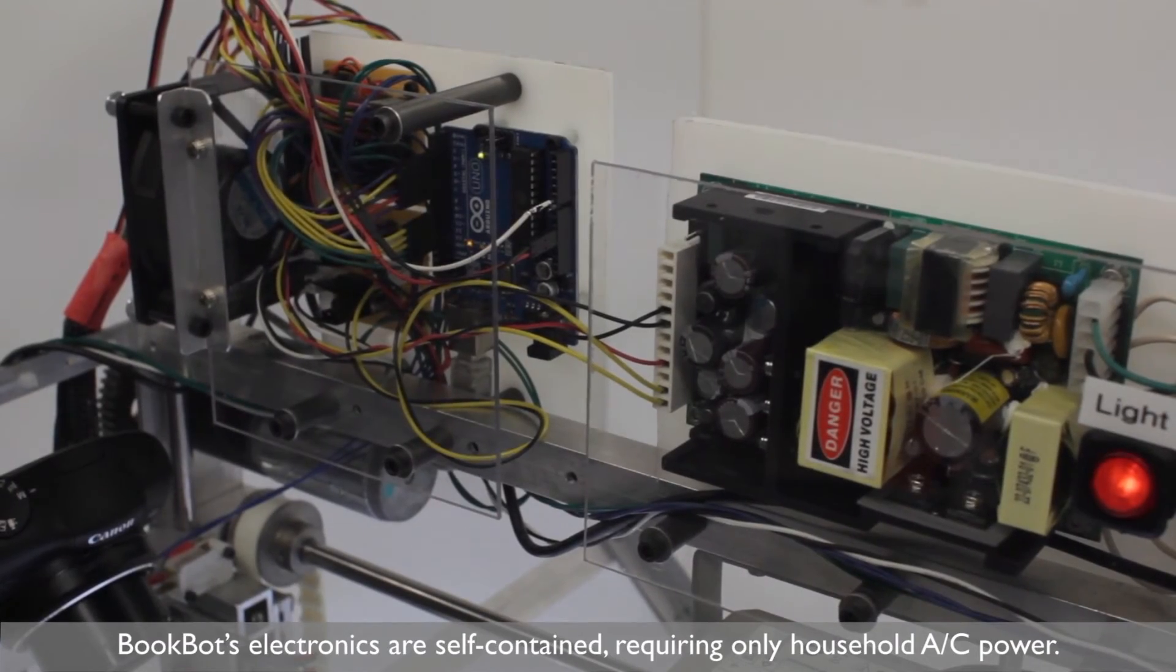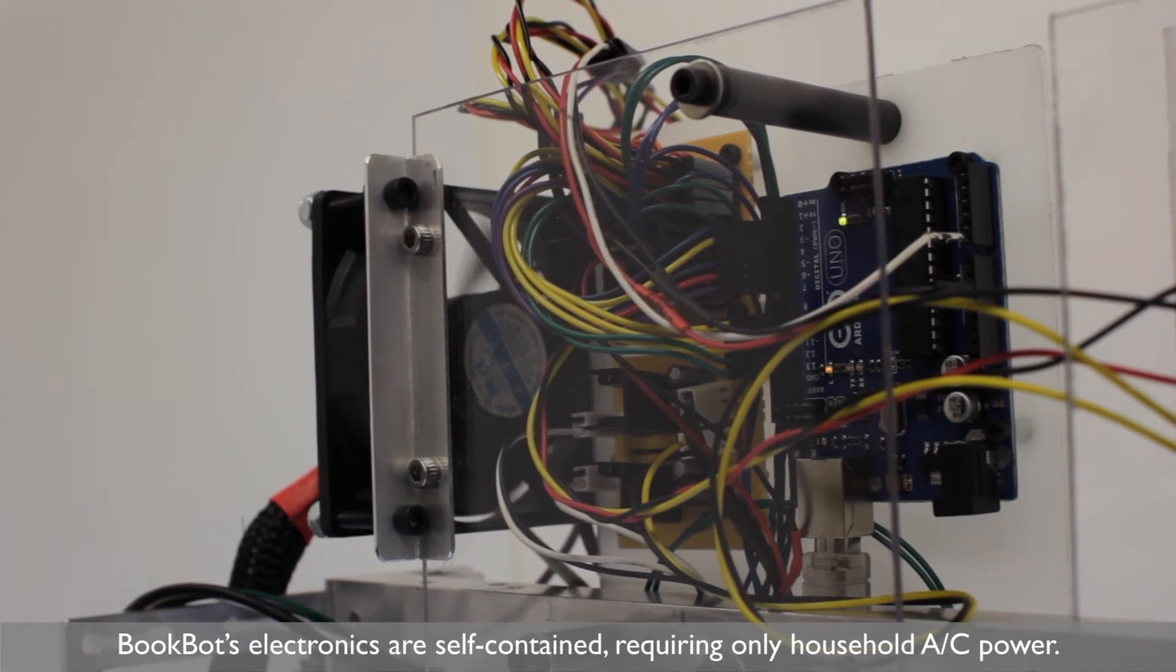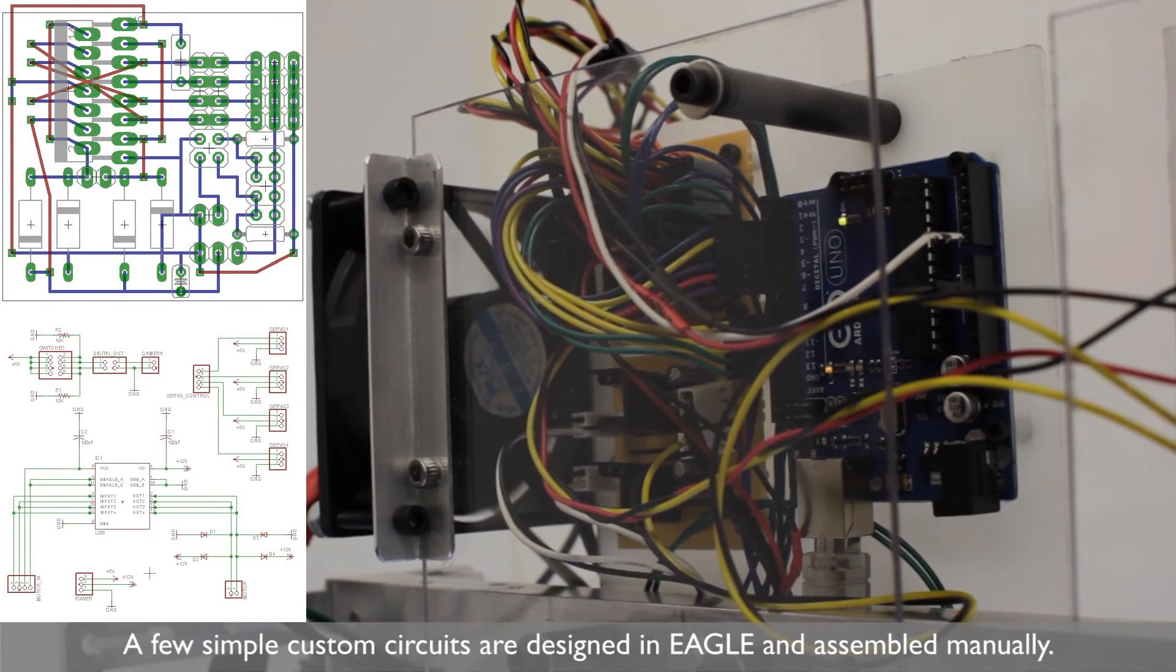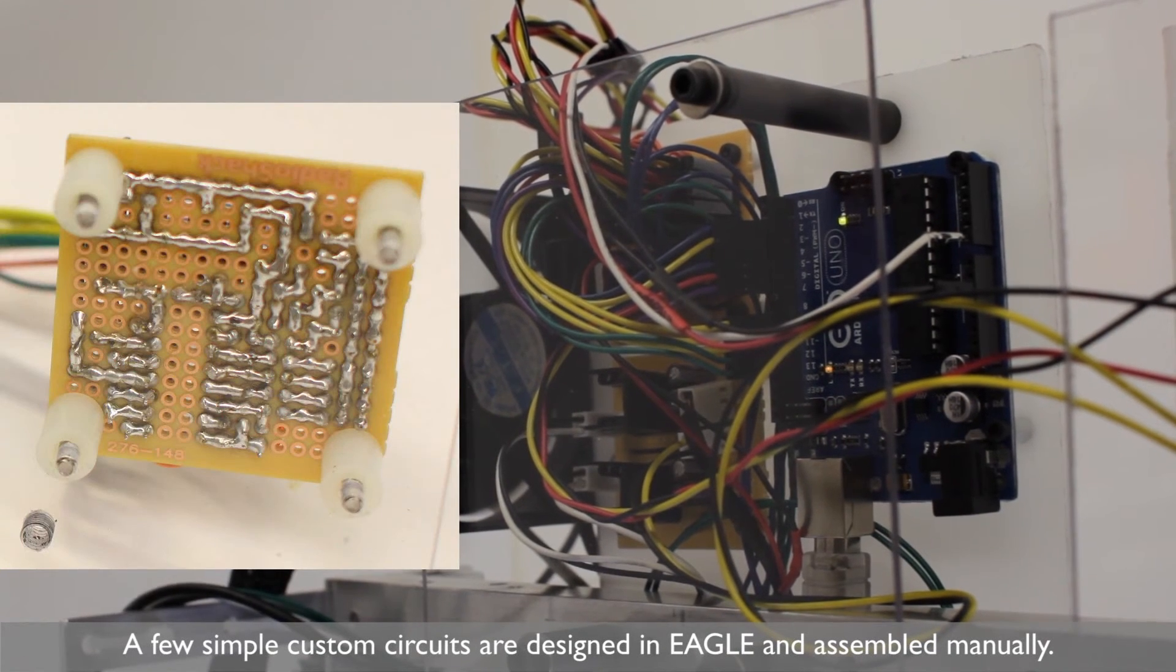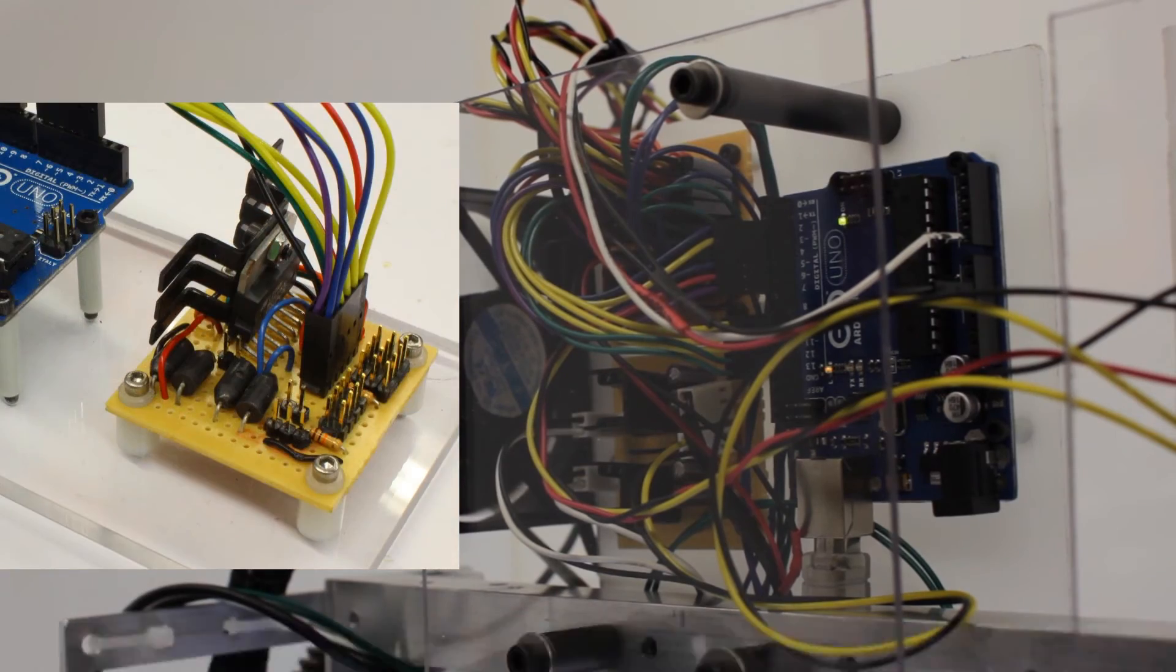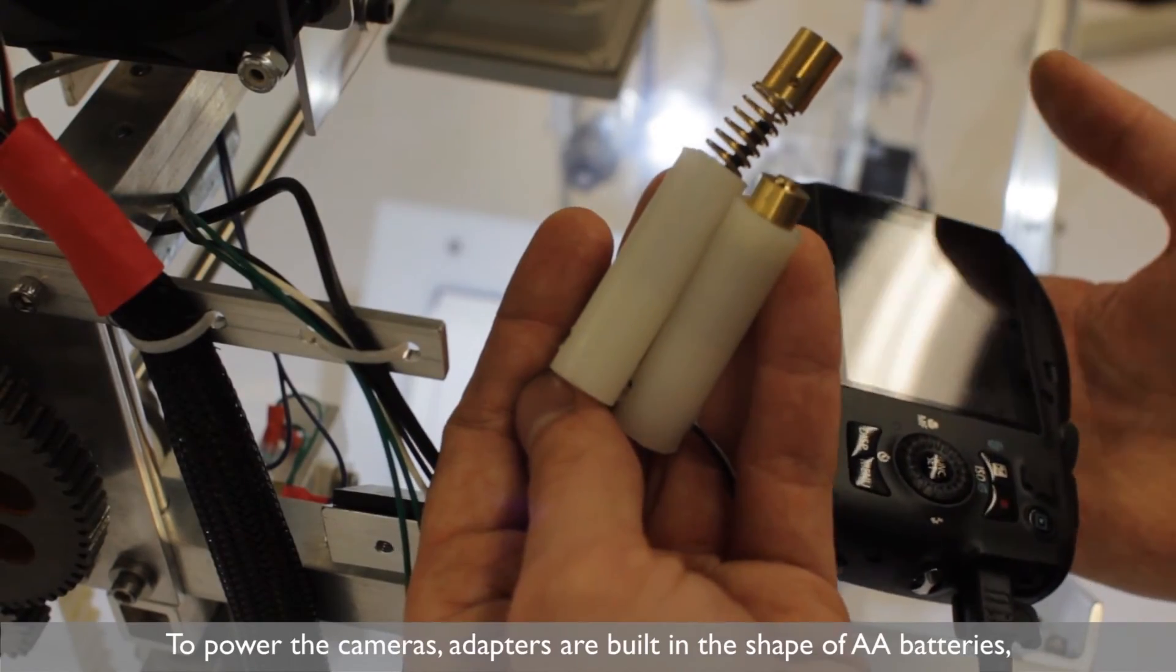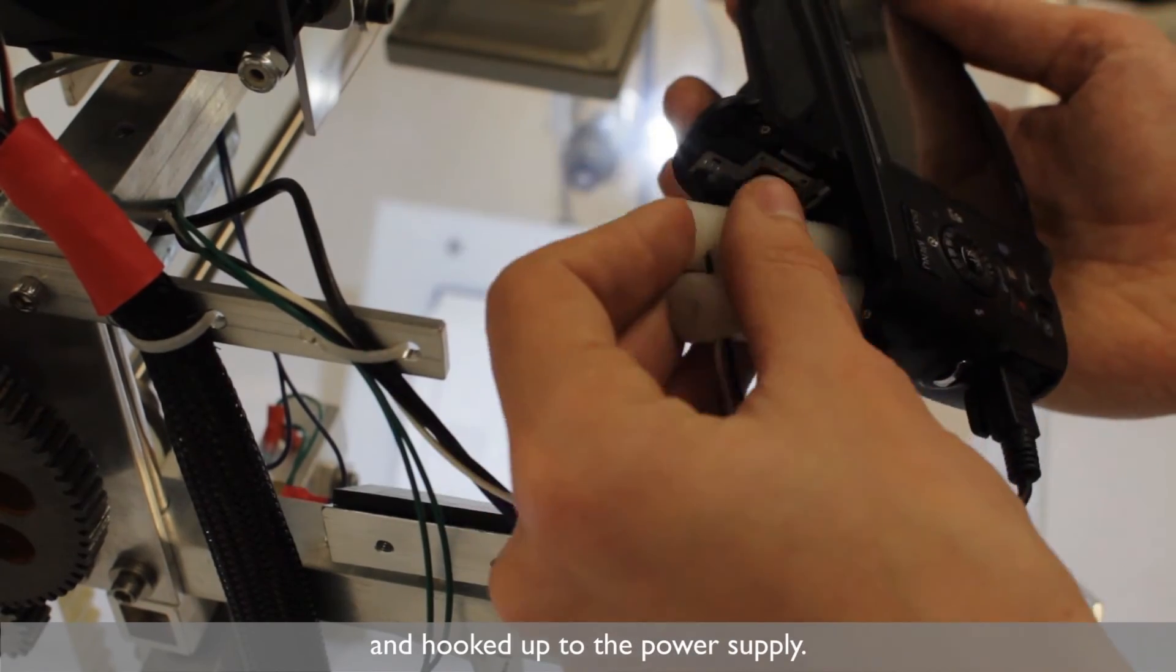BookBot's electronics are self-contained, requiring only household AC power. A few simple custom circuits are designed in Eagle and assembled manually. To power the cameras, adapters are built in the shape of AA batteries and hooked up to the power supply.